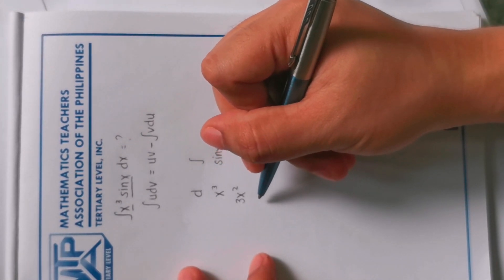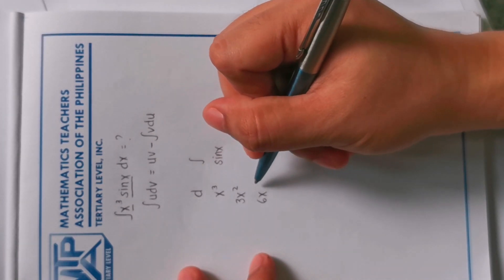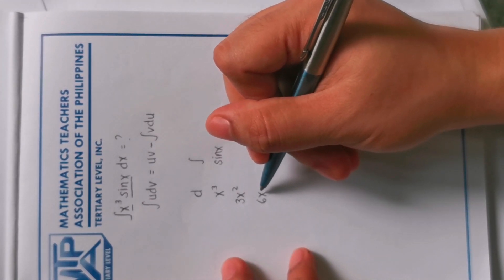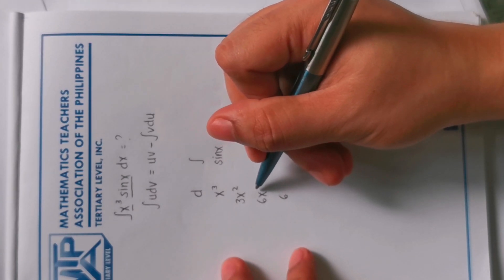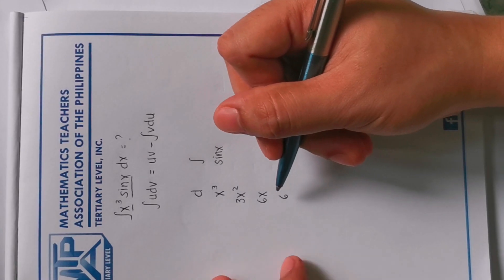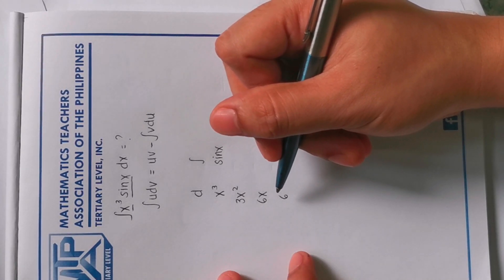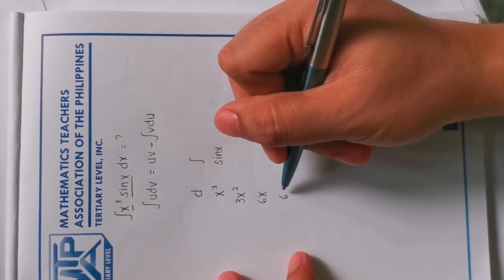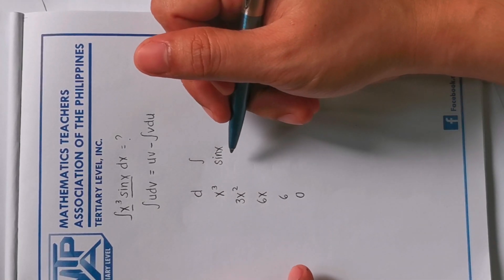The differential of 3x squared is 6x. So this is 2 minus 1, this will become 1, so we will not write 1 anymore. So the differential of 6x is 6. This is x to the 1 minus 1, this will become x to the 0. So any number raised to the power of 0 becomes 1, so we will not write 1 anymore. So the differential of 6 is 0.